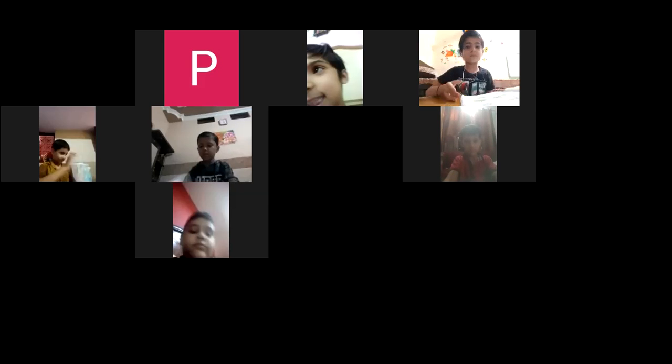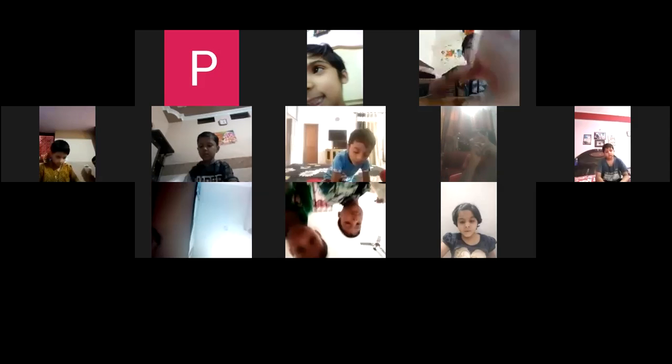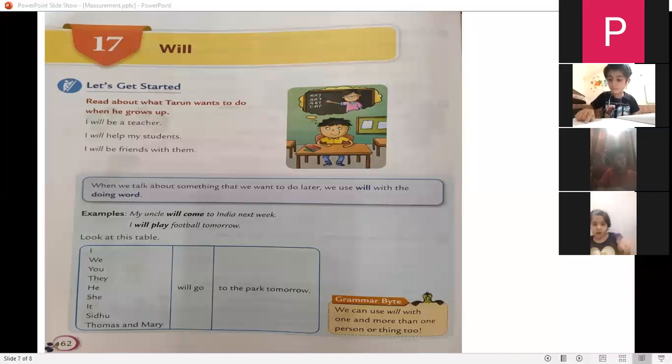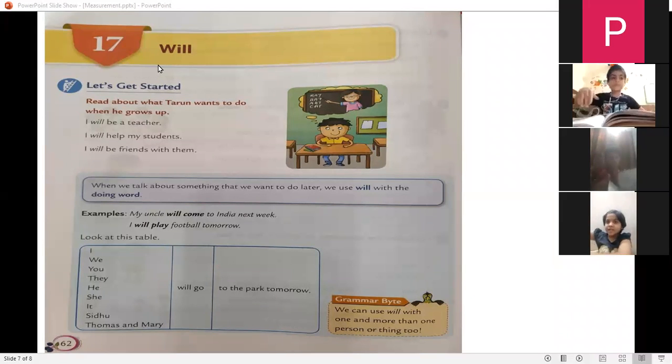English grammar books, chapter number 17, page number 62. The name of the chapter is Will, W-I-L-L, Will.